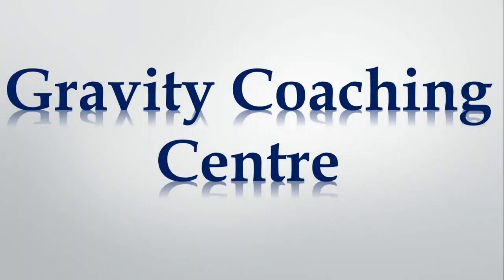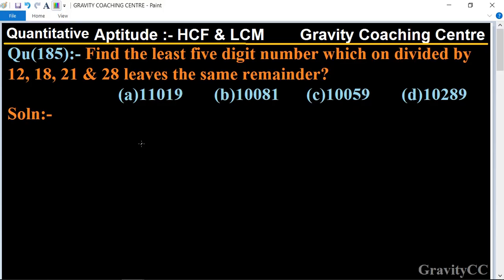Welcome to our channel, Gravity Coaching Centre. Quantitative Aptitude chapter: HCF and LCM. Question number 185: Find the least five-digit number which on divided by 12, 18, 21 and 28 leaves the same remainder. This question asks us to find a five-digit number such that when divided by 12, 18, 21 or 28, all remainders should be the same.